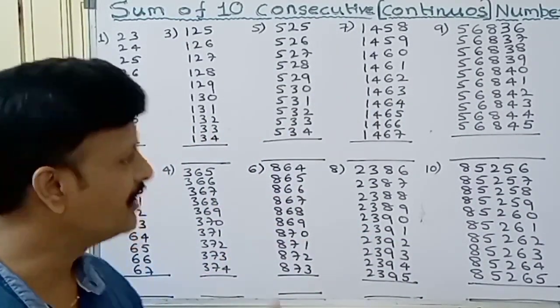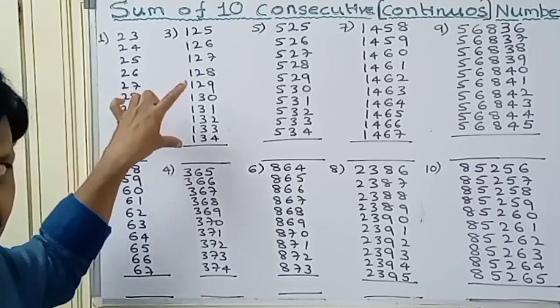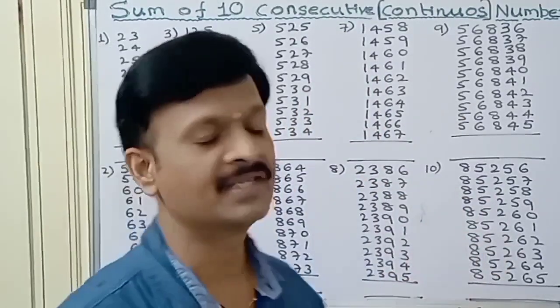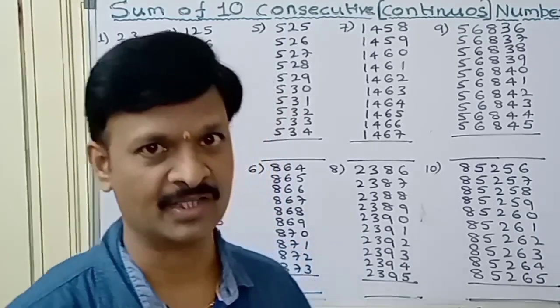By natural addition we can solve these questions within 1 minute each. For 4 or 5 digit numbers, it may take more than 1 minute, like 2 or 3 minutes.